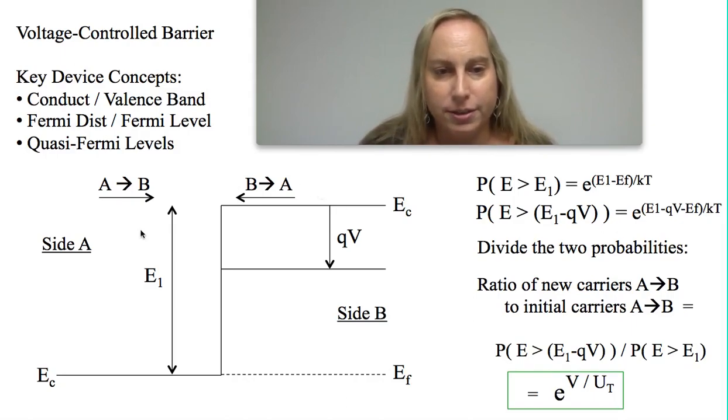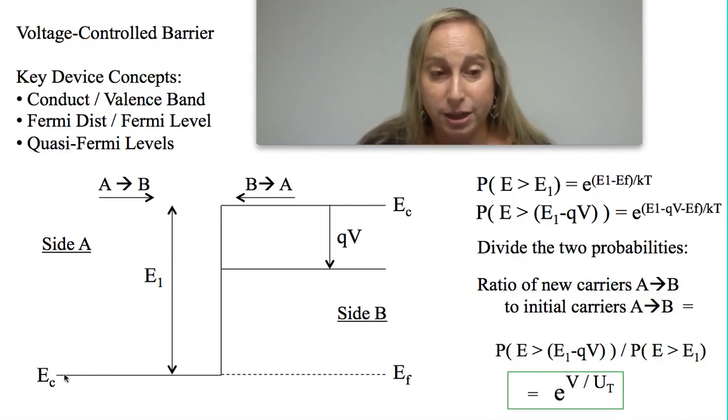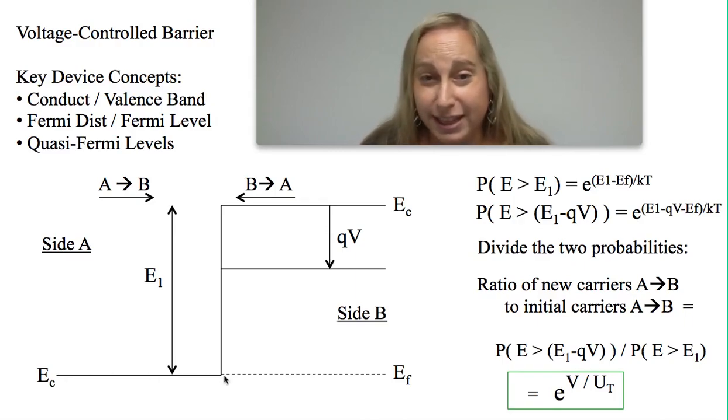You can look at this barrier problem right here. One of the things I like to ask is: what is needed for an electron to go from side A to B or side B to A? If I'm talking about an electron, I'm talking about the conduction band, where the Fermi level is assumed to be constant right at the conduction band. As a result, I'm going to assume that this barrier has a height E1.